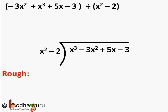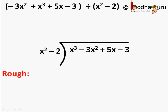Let's take an example. Let's divide minus 3x squared plus x cubed plus 5x minus 3, divided by x squared minus 2. As the polynomial is not in perfect decreasing order of degree, we rearrange the terms: x cubed comes first, then x squared, and so on. It becomes x cubed minus 3x squared plus 5x minus 3, divided by x squared minus 2.